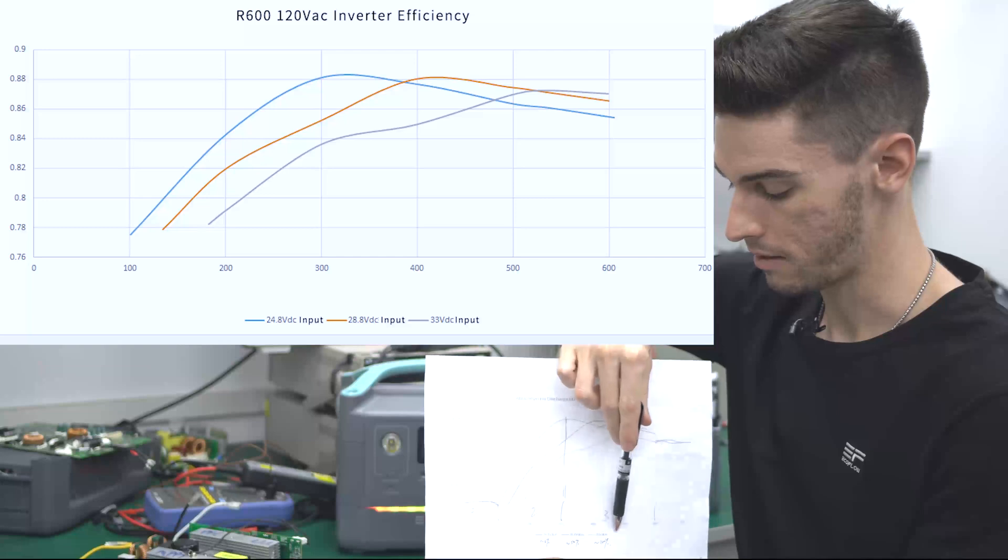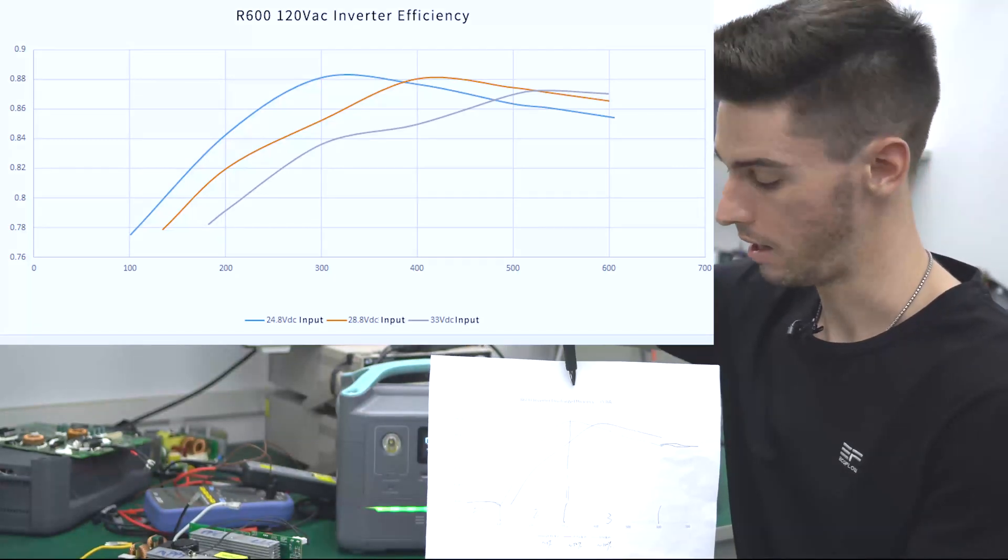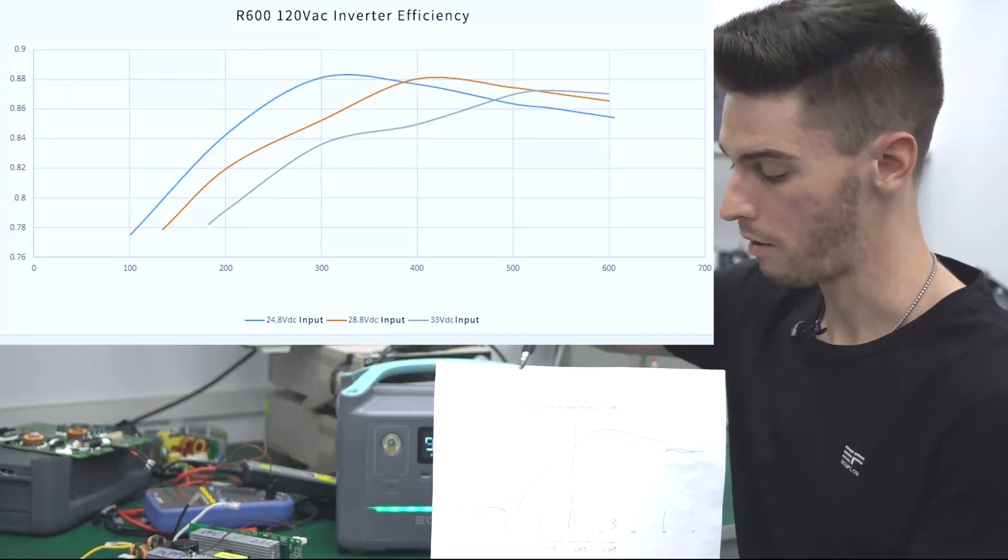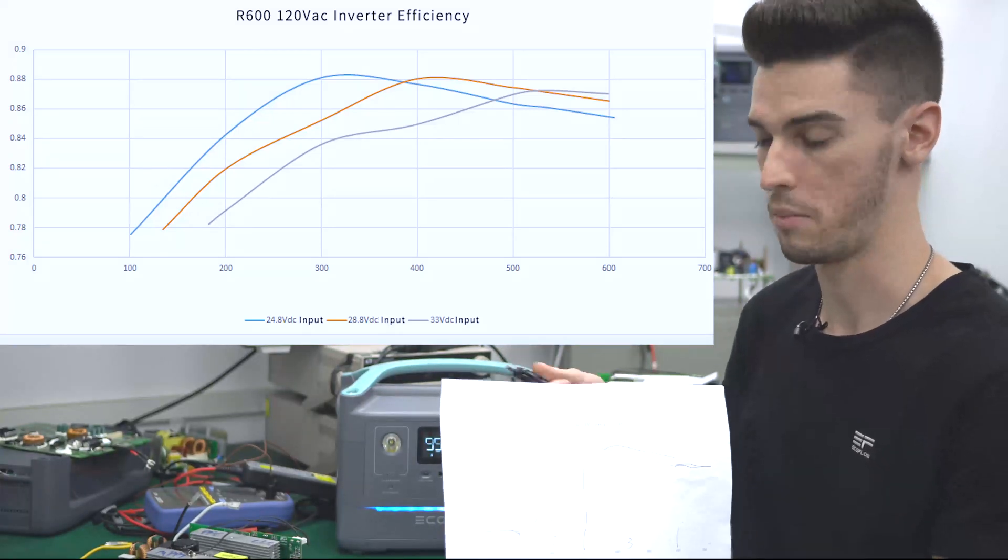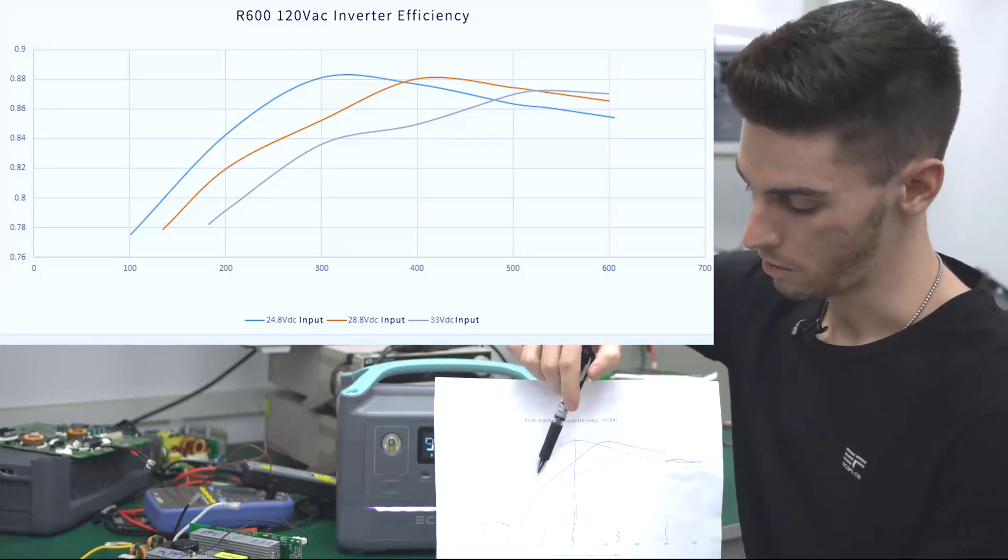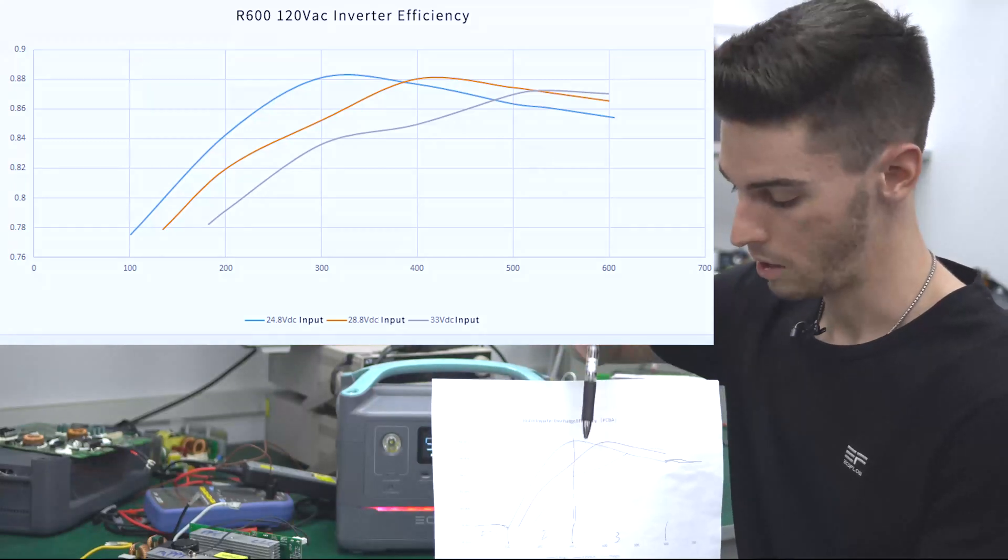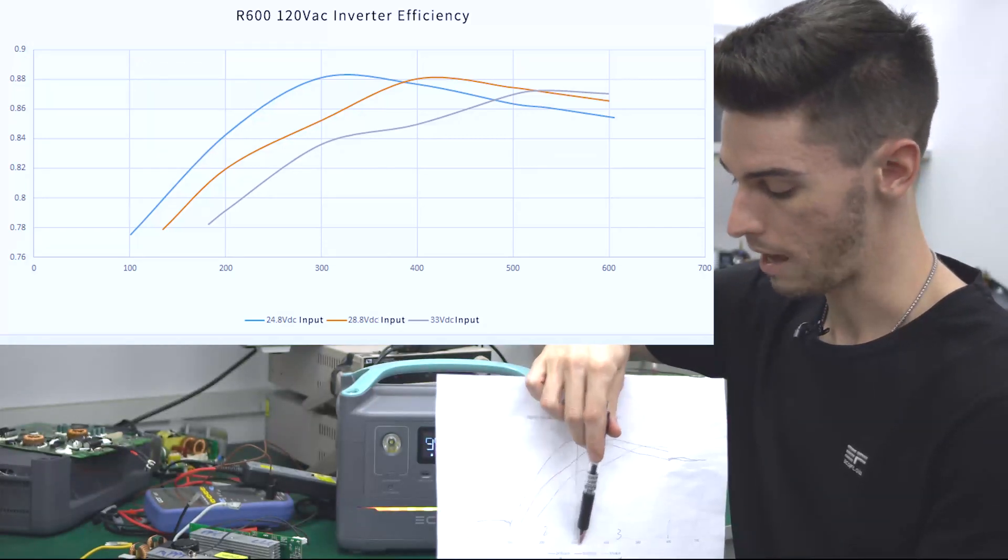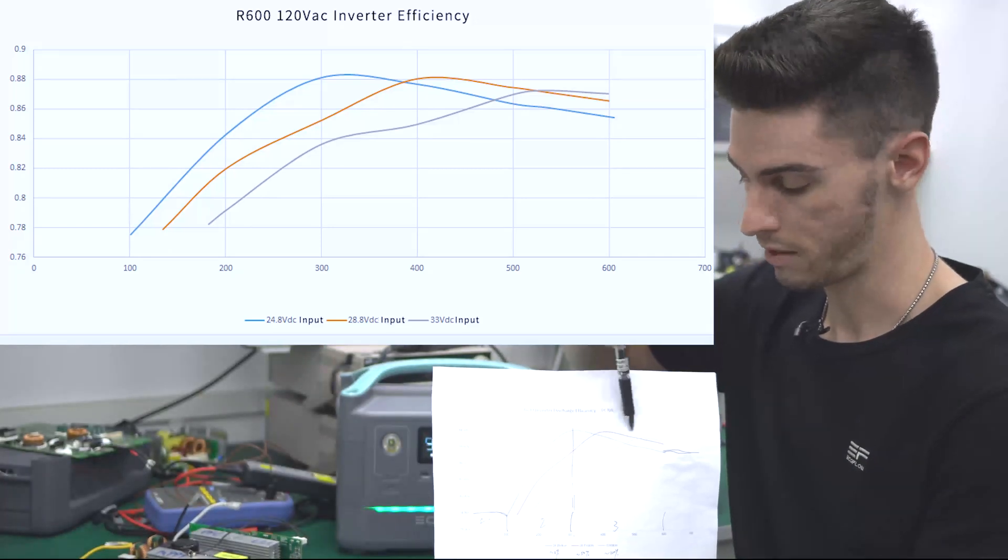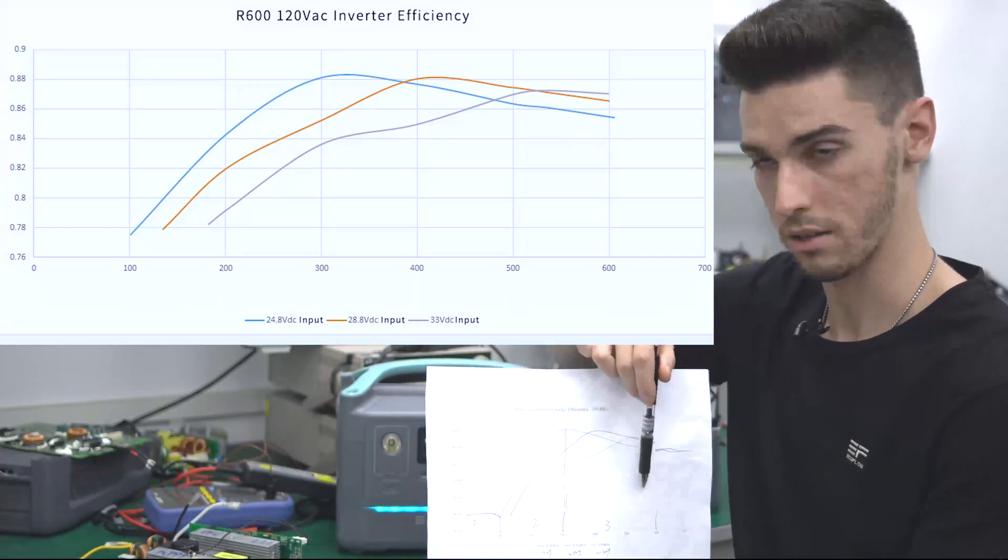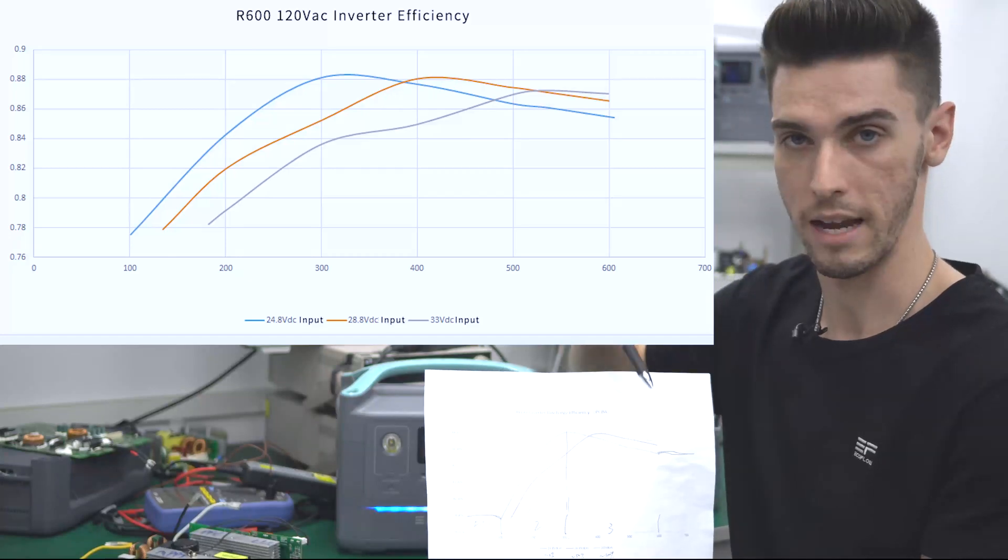You can see here on the x-axis, this is watts. The y-axis is a discharge efficiency percentage. Now if you're using a device that's below 100 watts, it's recommended that you use the DC output. It's just going to be more efficient this way. So these three lines represent varying voltages. You can see here this blue line peaked at 300 watts at an 88% efficiency. And the others didn't suffer much loss of efficiency up to the 600 watt max and all remained above 80%.